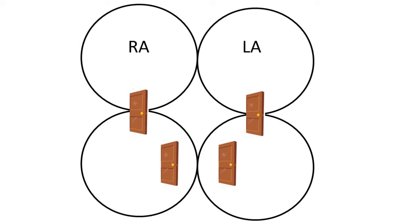Let's label these circles. The two top circles we will label with RA and LA — R is for right, L is for left. The two bottom circles are RV, the bottom right circle, and LV, the bottom left circle. Next let's label the first two doors: TV and BV. TV is between the upper right and lower right circles, and BV is between the upper left circles. Our two doors located within the two lower circles we'll label PV and AV.